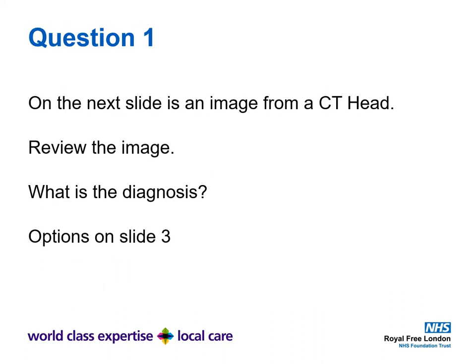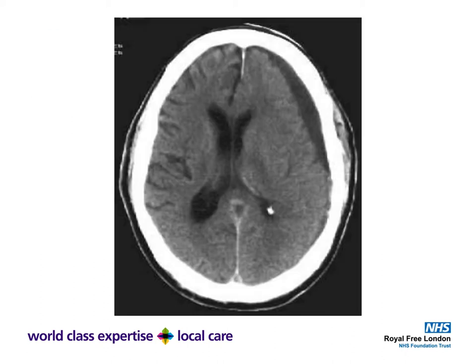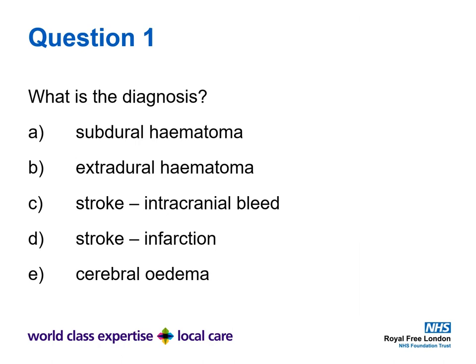Question one: on the next slide is an image from a CT head. Review the image and decide what you think is the diagnosis. Pause the video as long as you need to look at the CT head. What is the diagnosis? Is it A) subdural hematoma, B) extradural hematoma, C) stroke with intracranial bleeding, D) stroke with infarction, or E) cerebral edema?